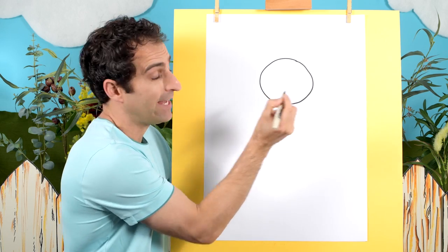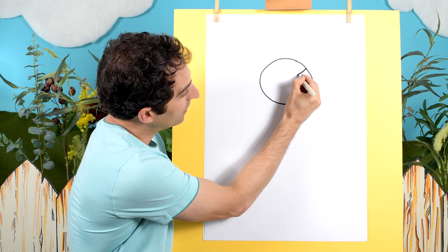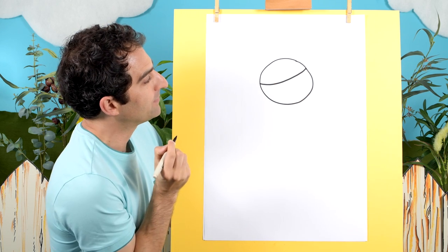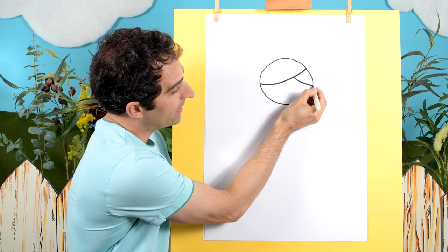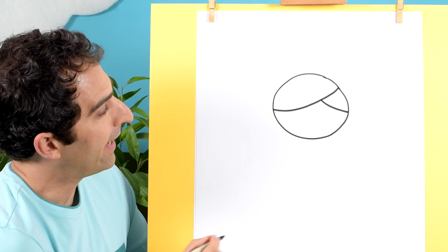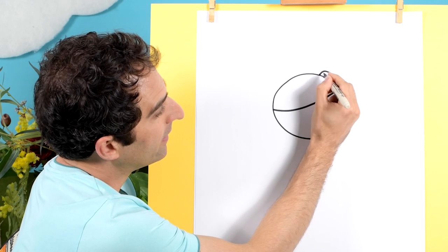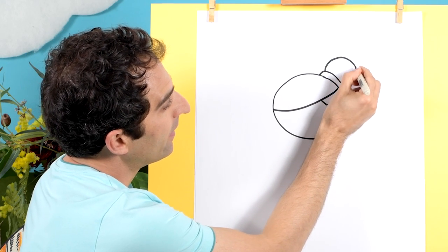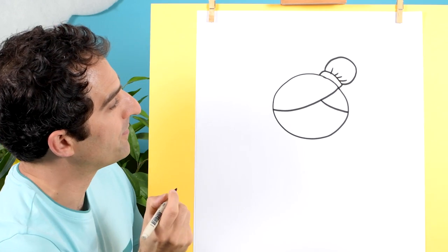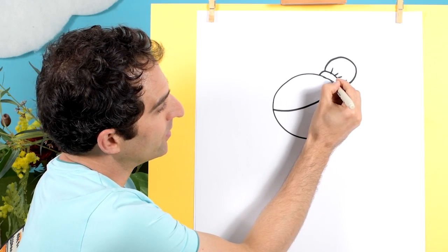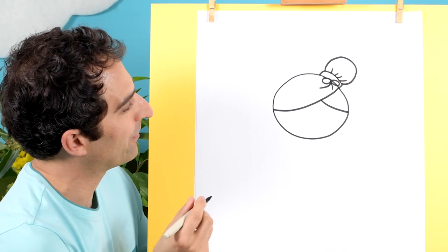Now we'll draw in the hair and we'll do that from this point here, about there, and we'll draw a curved line like that. And then another one that starts about here that curves that way. And we can give her a little bun. So we'll draw a line like that and then a circle on top with some lines there. And we can draw a little bow here. There we go.